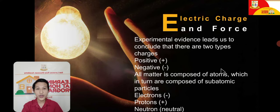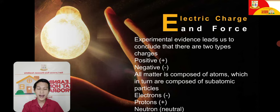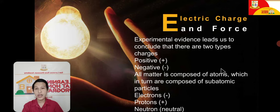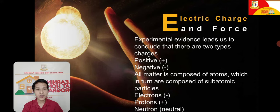Experimental evidence leads us to conclude that there are two types of charges: positively charged particles and negatively charged particles. All matter is composed of atoms, which are composed of subatomic particles. We have electrons — the negatively charged particles; protons — the positively charged particles; and neutrons — the neutrally charged particles with zero charge. These are regarded as the electric forces that hold things together.